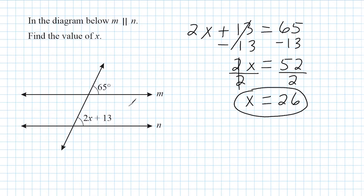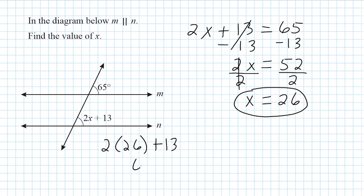We can check this by plugging 26 into the equation. If we take 2 times 26 and add 13, that gives us 65 — because 2 times 26 is 52, and 52 plus 13 is 65. Let's do another example.